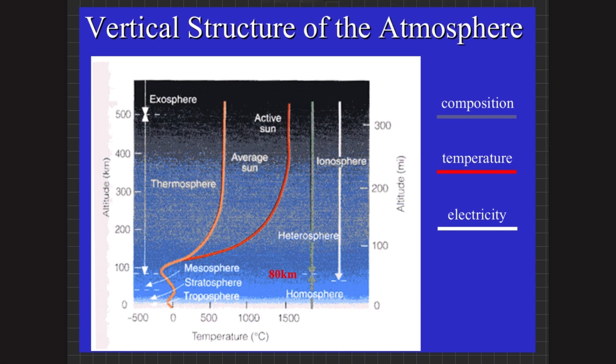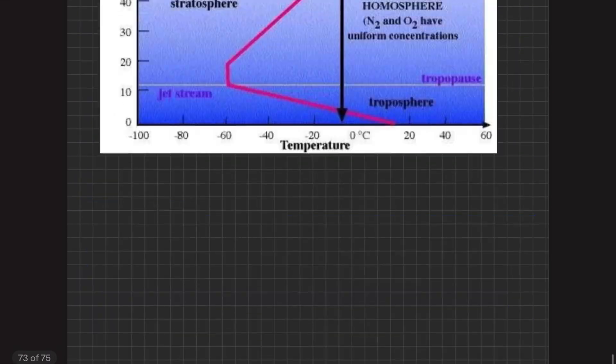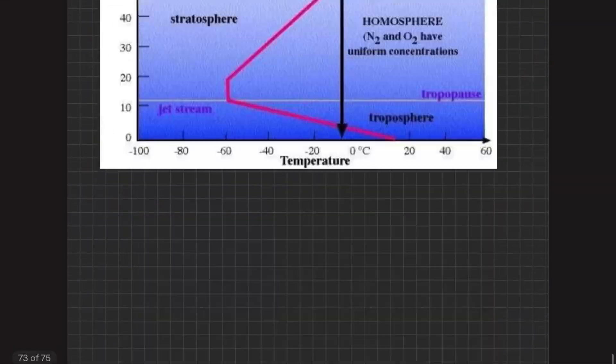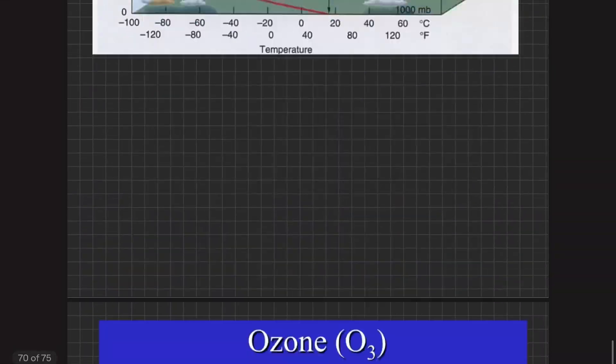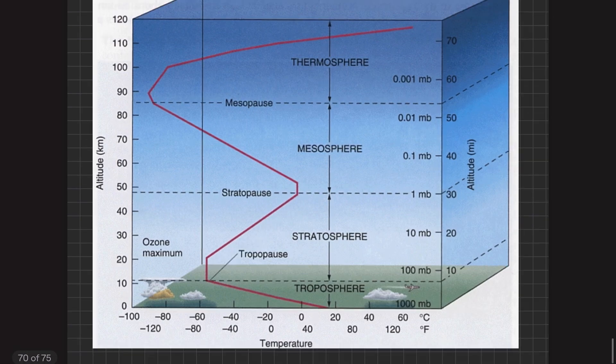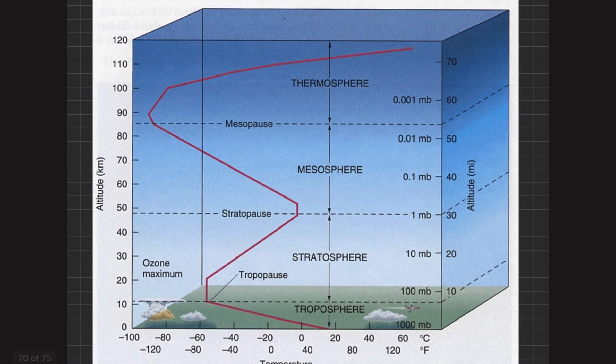This is the overall structure of the Earth's atmosphere. We have discussed various layers and why some are included in the homosphere while others are in the heterosphere. I hope you have understood this lecture well. If you have any confusion, let me know in the comment section and I will respond to your queries as soon as possible. Thank you, Allah Hafiz.